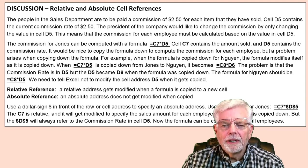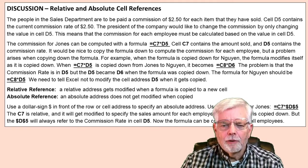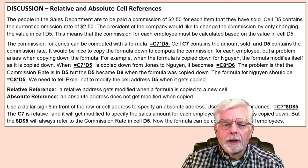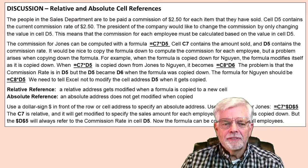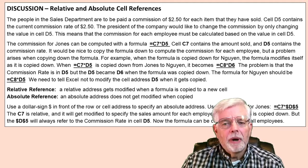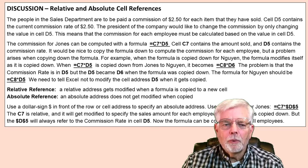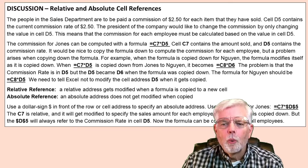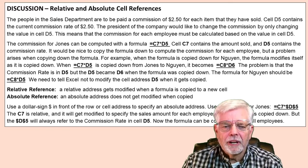It would be nice to copy the formula down to compute the commission for each employee, but a problem arises when copying down the formula. For example, when the formula is copied down for Wynn, the formula modifies itself as it is copied down. When equal C7 times F5 is copied down from Jones to Wynn, it becomes equal C8 times F6. The problem is that the commission rate is in F5, but F5 became F6 when the formula was copied down. F6 does not point to the commission rate. We need to tell Excel not to modify the cell address F5 when it gets copied.